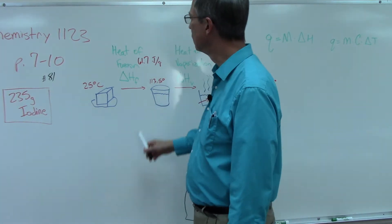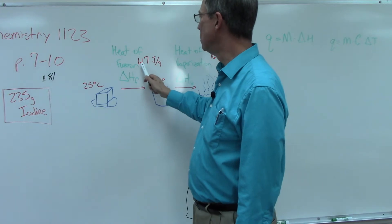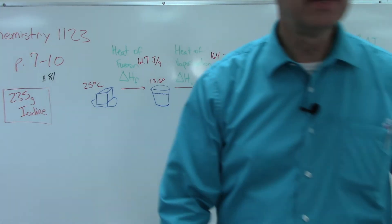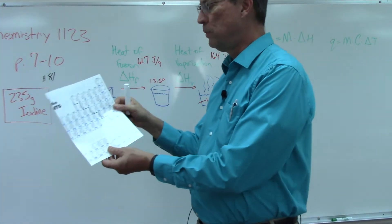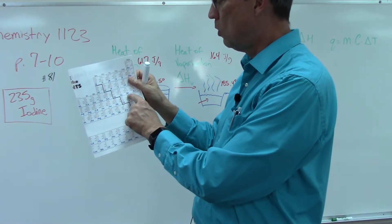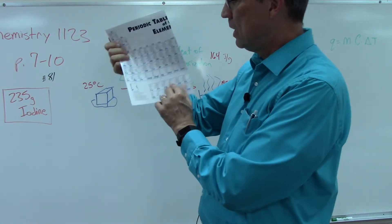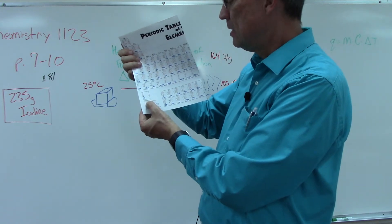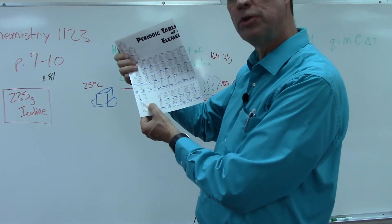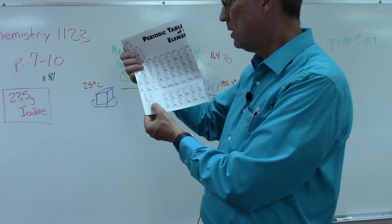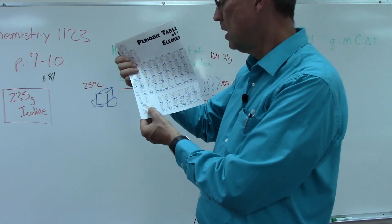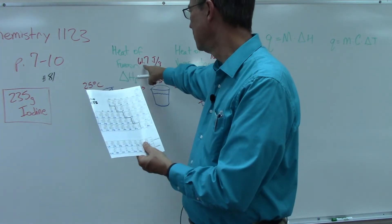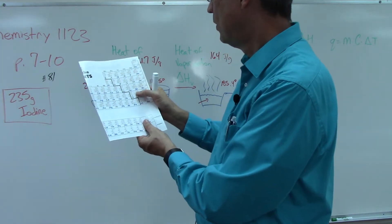The heat of fusion is 61.7, and did you have trouble finding that? It's here on your periodic table. Here's iodine with a bunch of numbers. Down in the corner it tells us the second one down is the heat of vaporization and the third number is the heat of fusion.